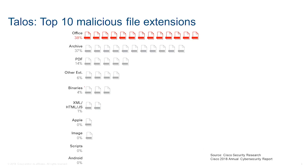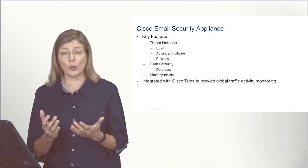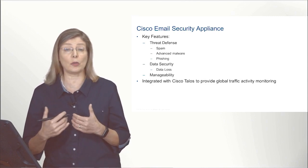Talos also tracks all things related to security and malicious activity. They reported last quarter the list of the top 10 email file extensions that propagate malware in a corporate network. At the top of that list you will see zip files, PDFs, and Office formats. How many of us receive emails with Excel, PowerPoint, Word, or PDF attachments? All of those attachments can be sources of infection.